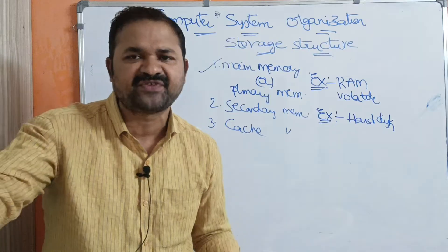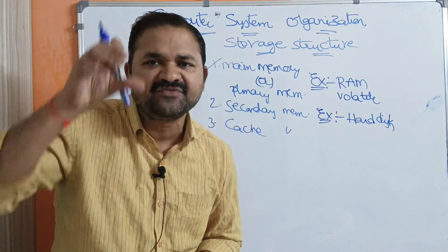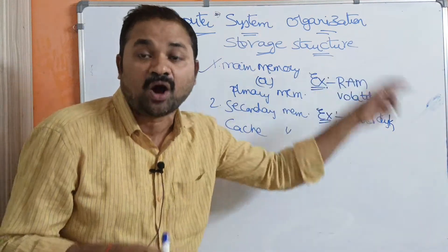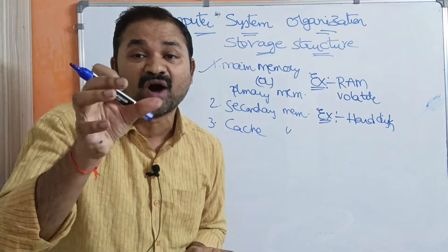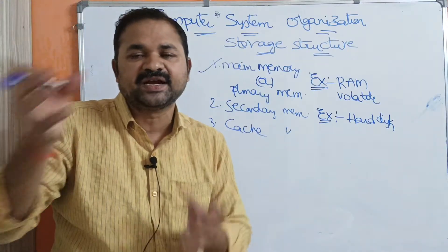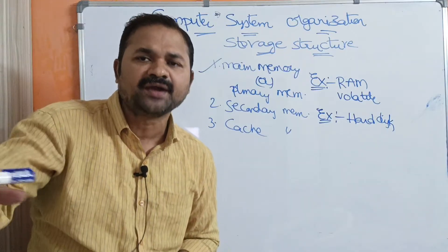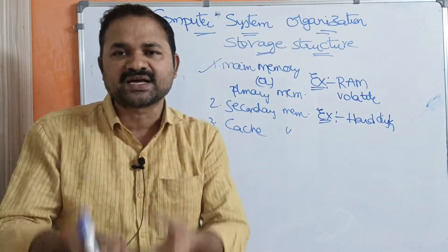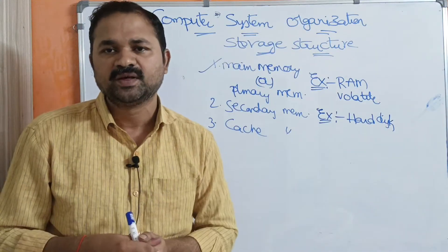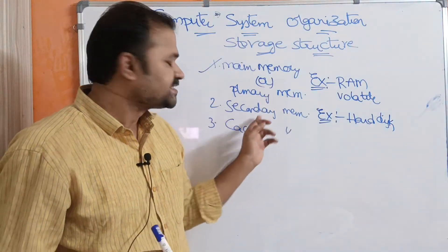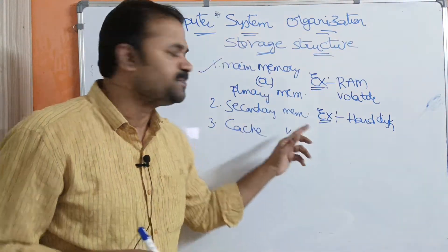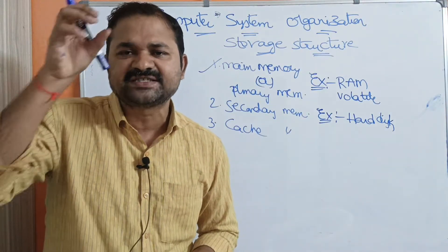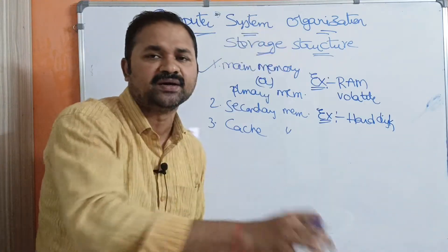Whenever we save any program, it will be stored in the hard disk. For example, if we have a movie which contains 5 GB of data, when we save that movie it will be stored in the hard disk. But at the time of watching the movie, that content will be transferred from hard disk to main memory, because CPU can only access main memory directly, not secondary memory. So the operating system transfers the movie portion from hard disk into main memory.